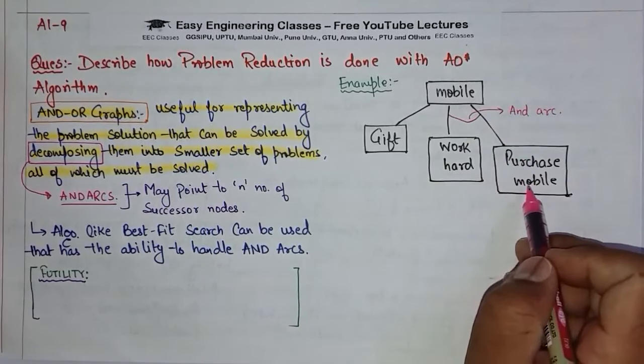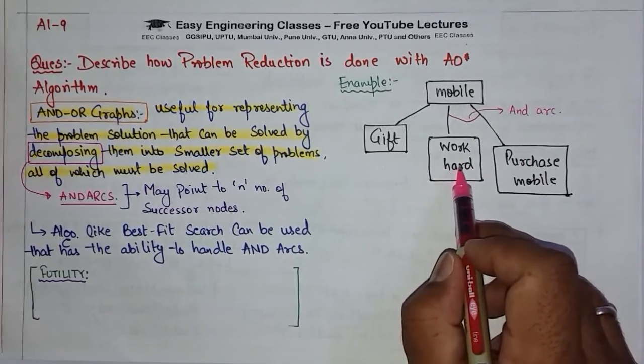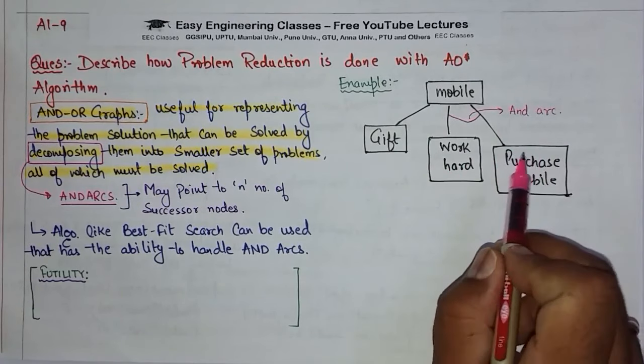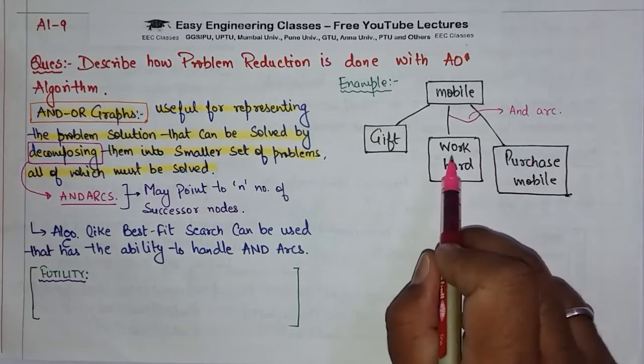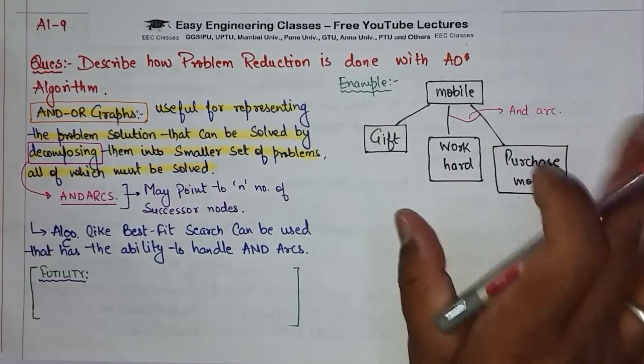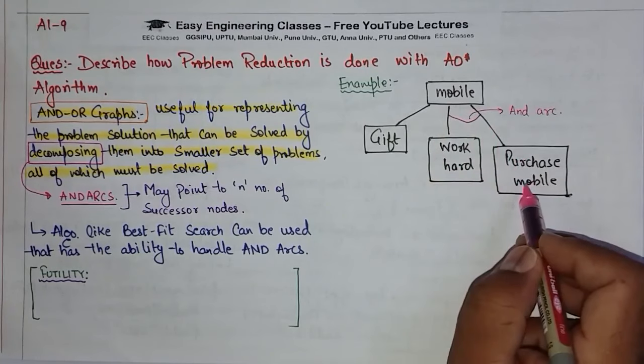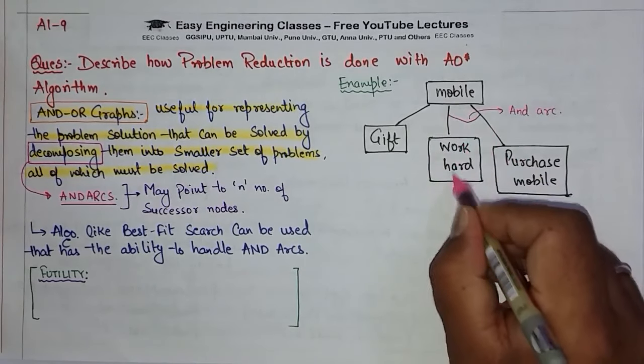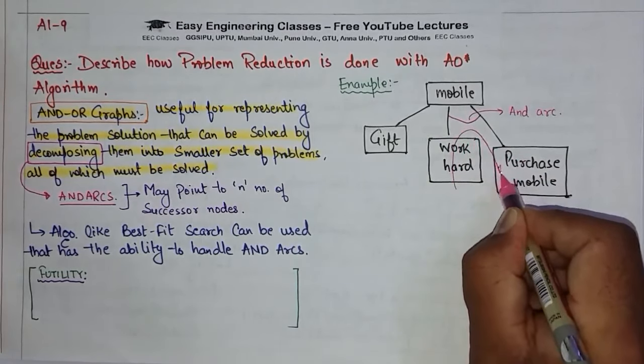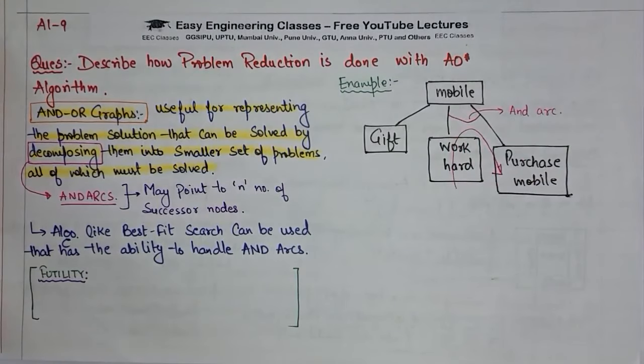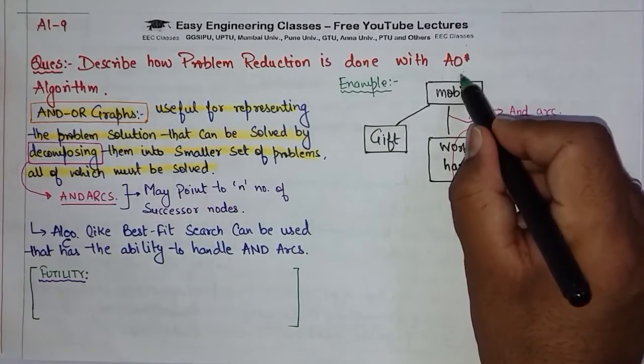This means that it is necessary to do this for the right side and necessary to do this for the left side. A person has to work hard to purchase the mobile. This is the AND-OR graph.